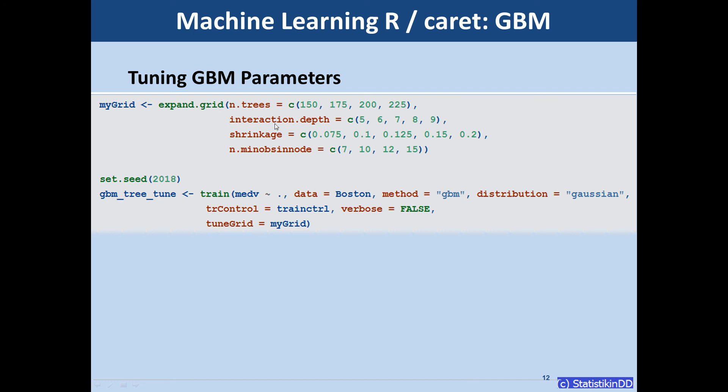expand.grid is a function from base R. And it just gives me a matrix with all combinations of these parameters. And here I specified four or five parameters for each one. So it makes 400 models in total if we use all combinations. So this is the matrix mygrid. And I pass this matrix to the tunegrid parameter in the train function.